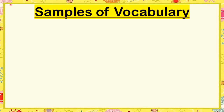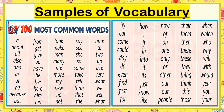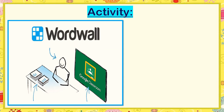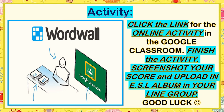Now class, we have here samples of vocabulary words being used in English — the 100 most common words. You can practice on your own by reading this. If there are words you don't understand, you can send me a message in Line, Google it, or look for the meaning in your dictionary whenever you are convenient. We have come to the end of our discussion, and it's time for me to give you an activity. This week's activity is an online activity called Word Wall Application. Just click the link in our Google Classroom account in the ESL subject, finish the activity, screenshot your scores, and upload it in the ESL album in our Line group.